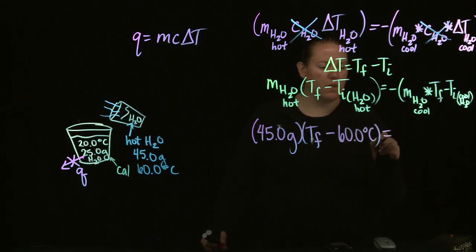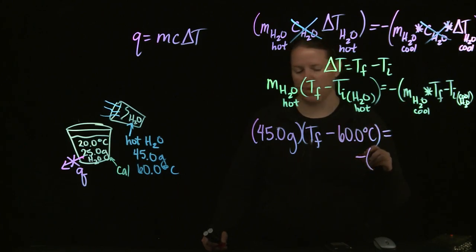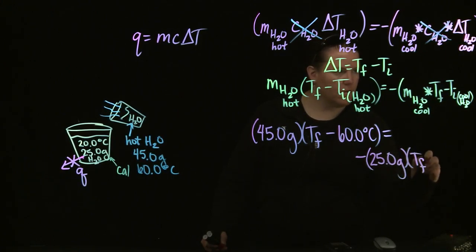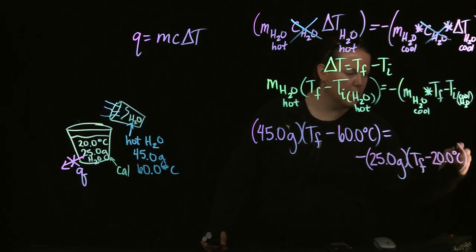And that's going to be equal to the negative, let's do that on the next line down, negative of the mass of the water that's cool, 25 grams, times T_final minus the initial temperature of the cool water which was 20 degrees Celsius.